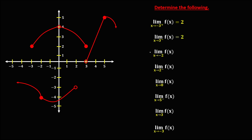Then for this limit, the limit of f of x as x approaches negative 2. This is x equals negative 2, and since this coordinate has both the left side limit and the right side limit, therefore this limit exists and the limit is equal to negative 4.